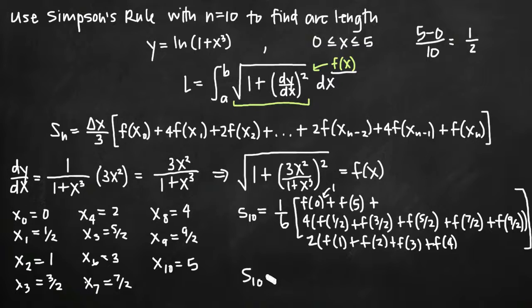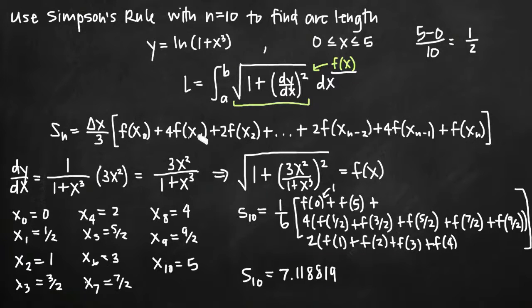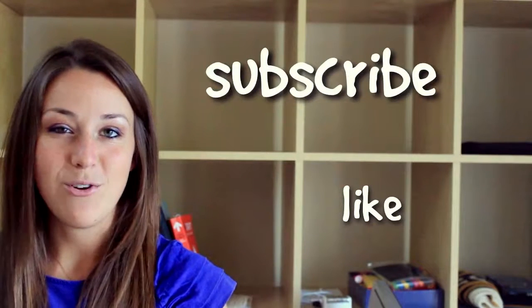Once we complete that arithmetic, we get an approximation of about 7.118819, which is the approximate arc length of the original function y equals the natural log of 1 plus x cubed, between 0 and 5 using Simpson's rule approximation with n equal to 10 subintervals. I hope you found that video helpful — if you did, like this video and subscribe to be notified of future videos.